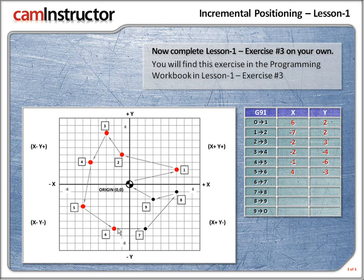Next up, 6 to 7. From 6 to 7, we're moving in the x positive direction. How many squares? 1, 2, 3, 4. So the x will be plus 4. Now if you walked from 6 to 7, how much would you move in the y-axis incrementally? Absolutely nothing. So from 6 to 7, the y is 0. So 6 to 7, x is plus 4 and y is 0.